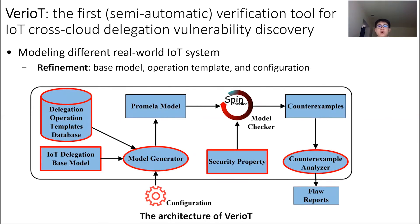The main challenge is to model different real-world IoT systems since they usually support different operations with different data flows. To address this, we built a base model that includes a minimum set of actors and delegation operations that trigger state transitions. We also built a set of templates for different types of delegation operations, which can be directly used, customized, or extended. To verify real-world delegation systems, one builds a configuration file listing the actors, operations, and their templates. Our model takes this configuration file as input to automatically generate an executable model and uses SPIN — an off-the-shelf model checker — to verify the security property and output flaw reports.